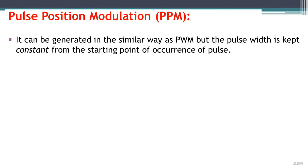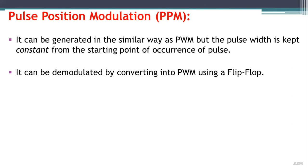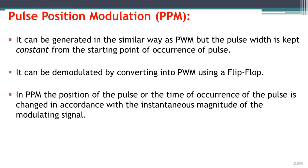Pulse position modulation, or PPM, can be generated in a similar way to PWM, but the pulse width is kept constant from the starting point of occurrence of the pulse. It can be demodulated by converting into PWM using a flip-flop. In PPM, the position of the pulse — the time of occurrence — is changed in accordance with the instantaneous magnitude of the modulating signal.